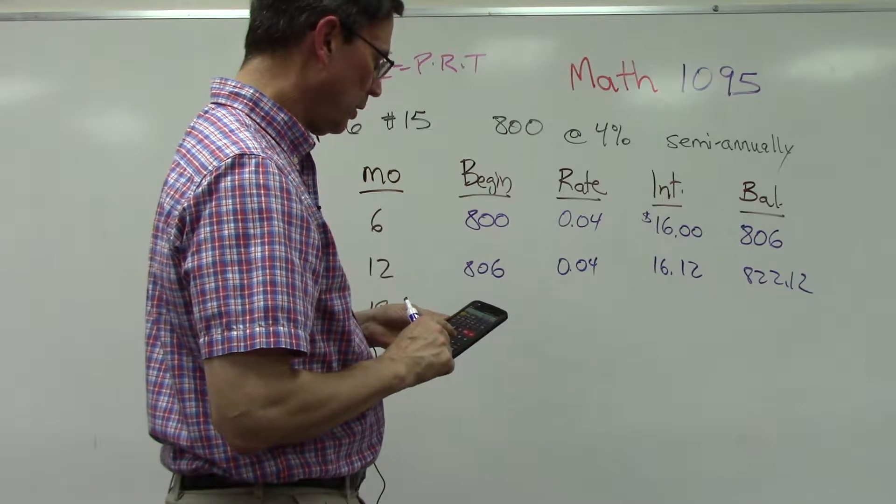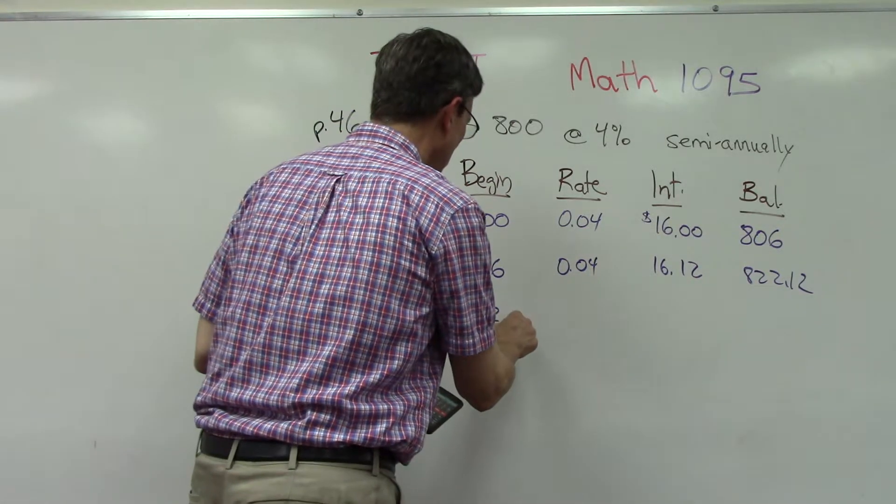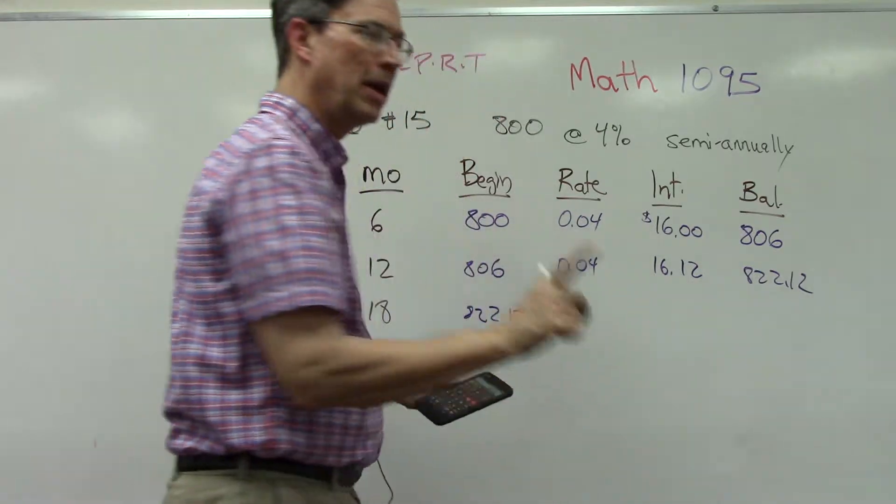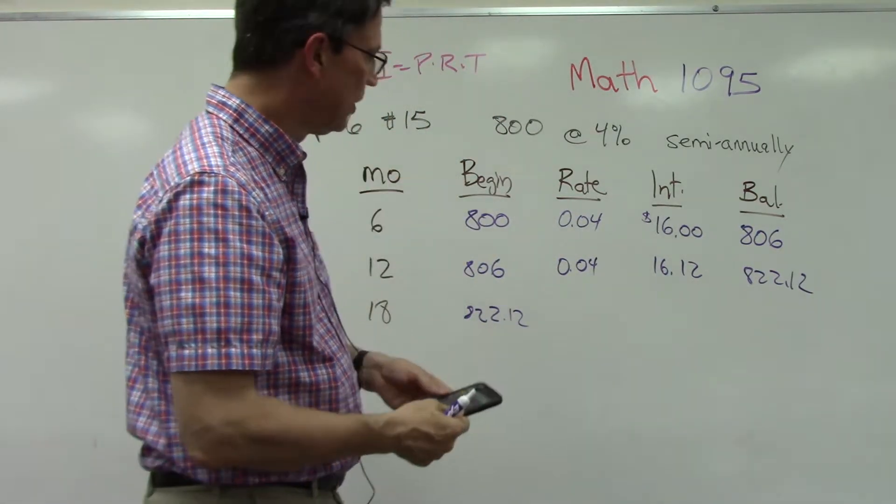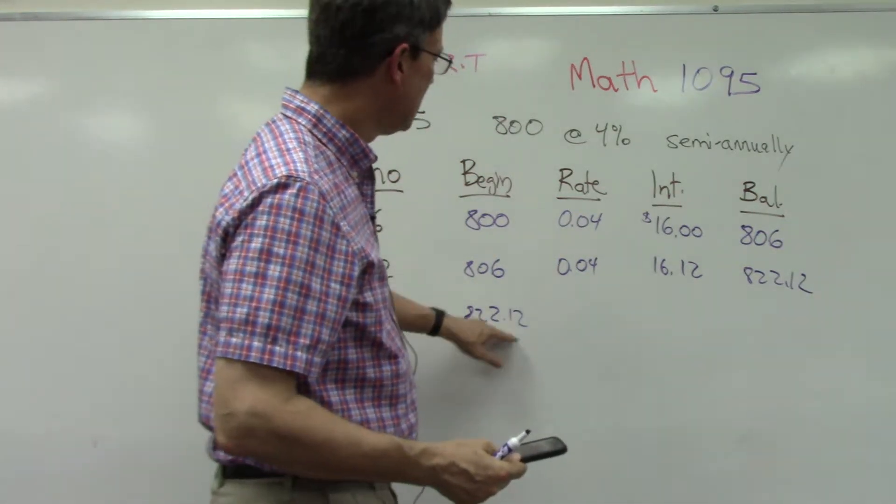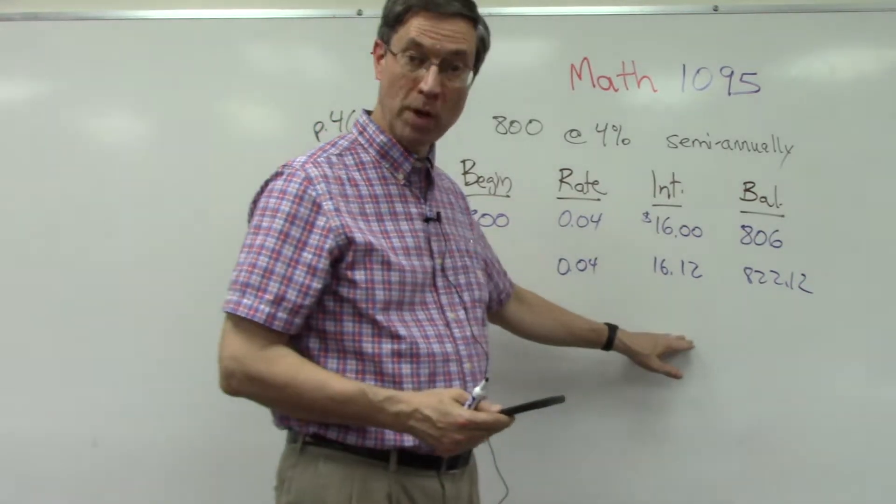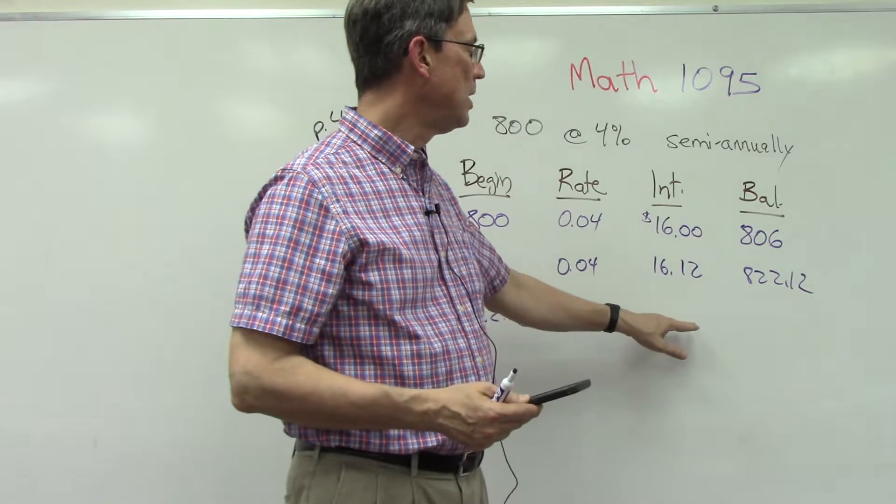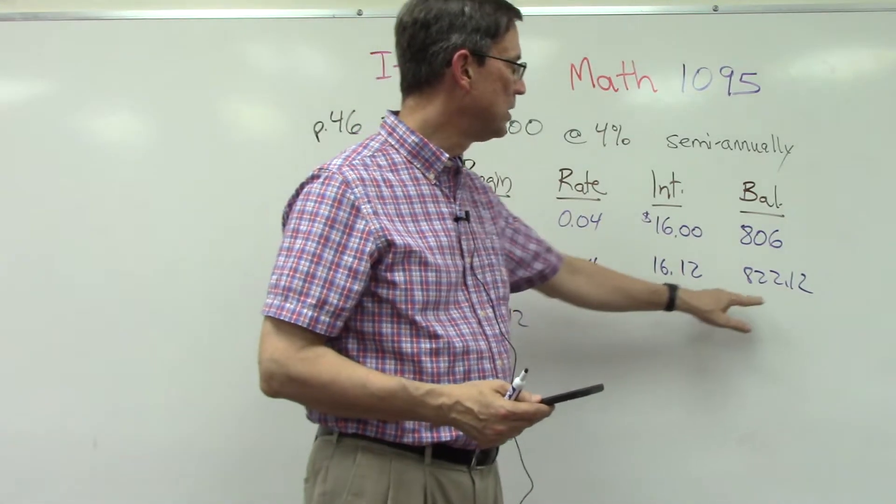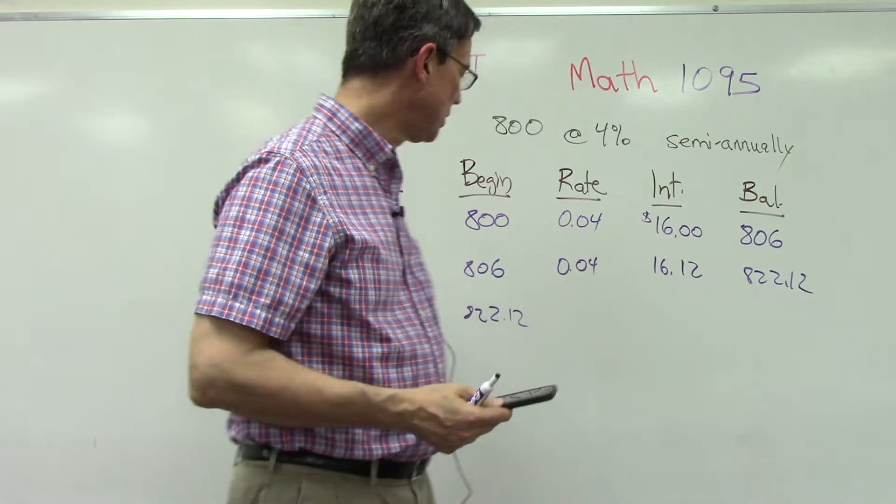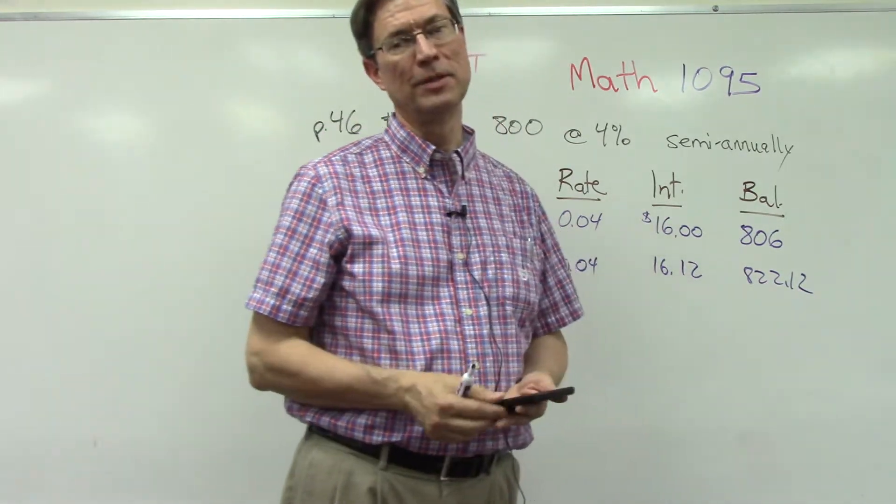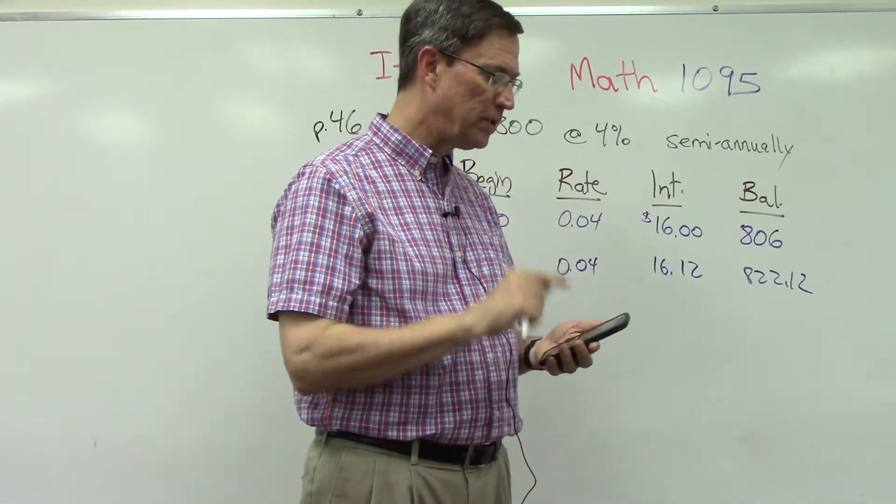And then you're going to multiply that times the same rate, and I'm not going to finish the problem for you, I want you to finish it. So now you take this times 0.5 and that would be the interest here. And then you'll need to add that interest to your starting balance here to get your new ending balance. So several steps involved there.